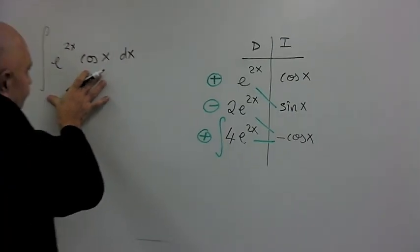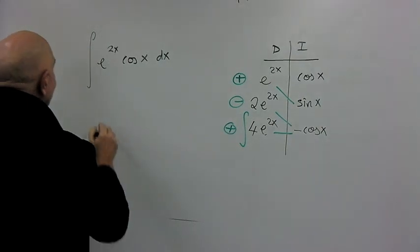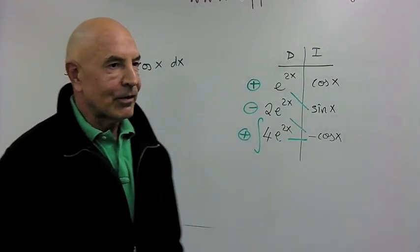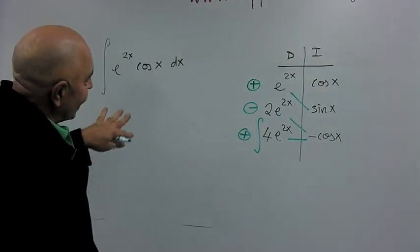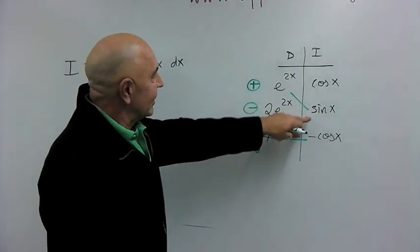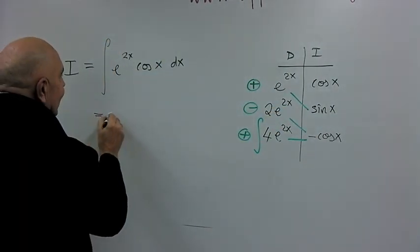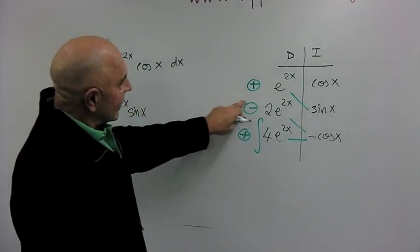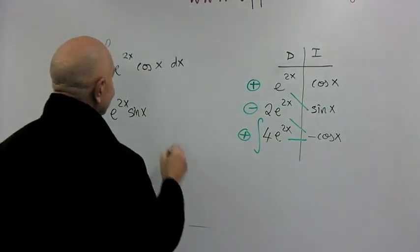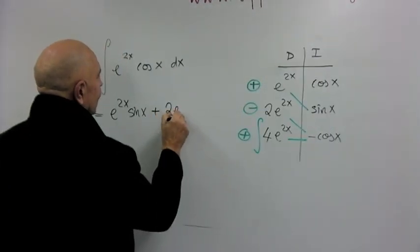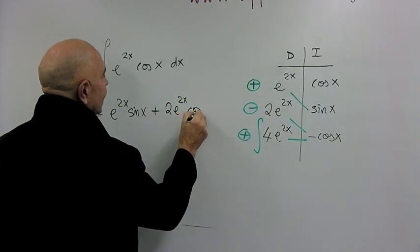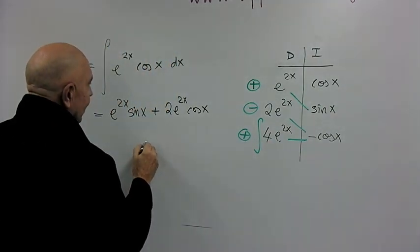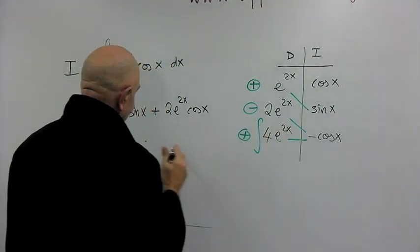this thing I'm trying to calculate, by the way, let's call it I, just for fun, I for Igor. So, this is Igor. And how do you calculate Igor? It's this times this, e to the 2x times sine x. Minus times a minus gives you a plus. 2e to the 2x times cosine x. And here we get another integral. Plus times a minus gives you a minus.